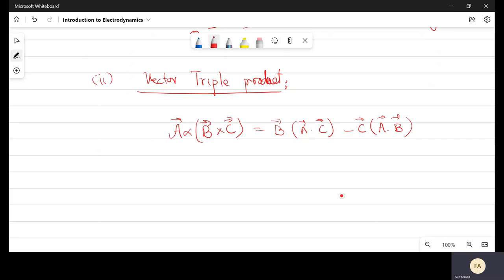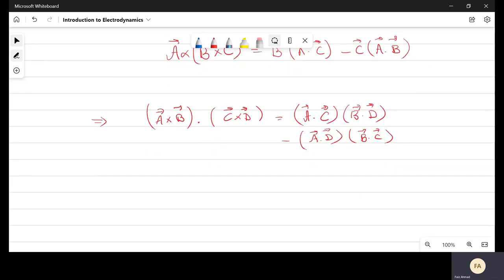The other type of vector products, or you can call the four product, is A cross B dotted with C cross D. This is a vector dotted with C cross D, again a vector. So it will become a scalar number and it can be expressed as A dot C times B dot D minus A dot D times B dot C. So this is still a scalar number.